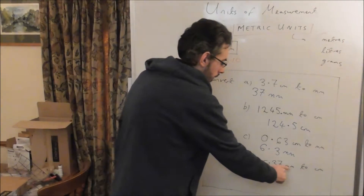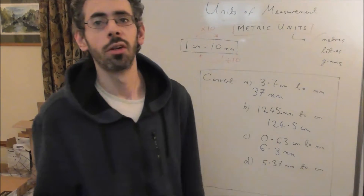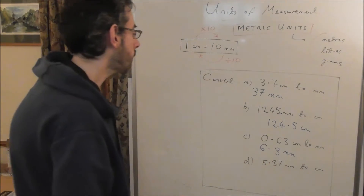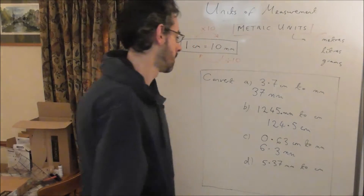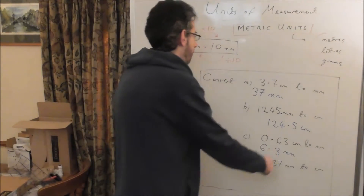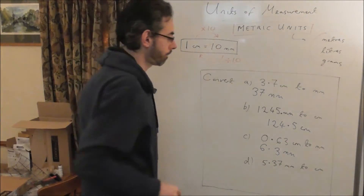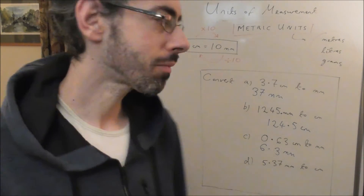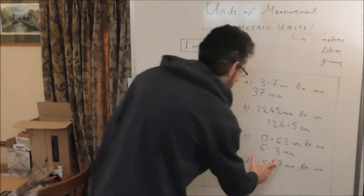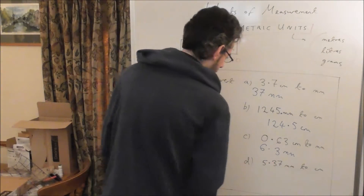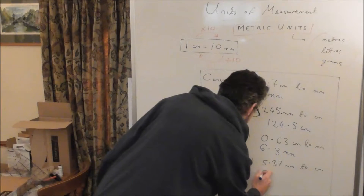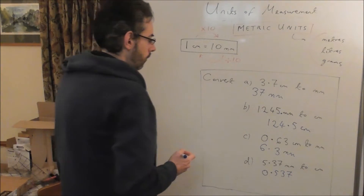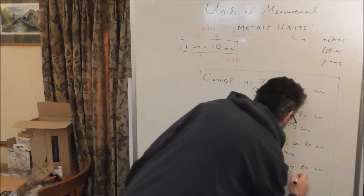Finally, 5.37 millimetres — let's change that into centimetres. That's actually less than 1 centimetre. To go from millimetres to centimetres, you divide by 10, moving the digits one place to the right. The 5 moves past the decimal point, giving an answer of 0.537. So 5.37 millimetres is 0.537 centimetres.